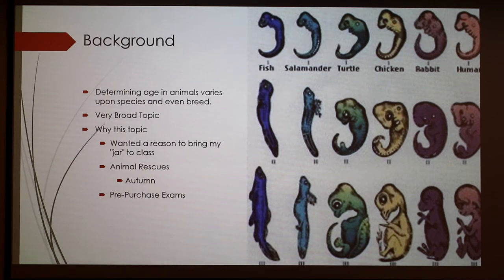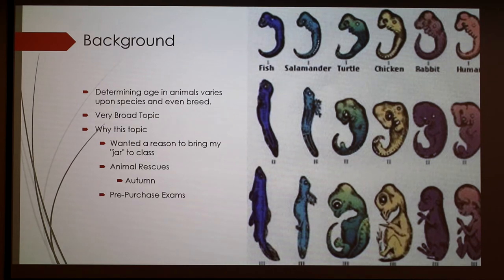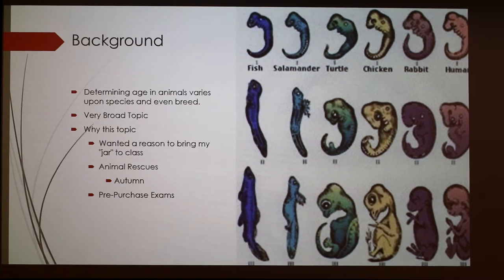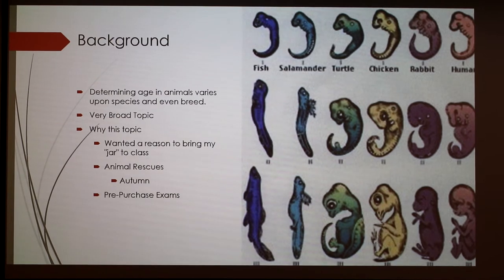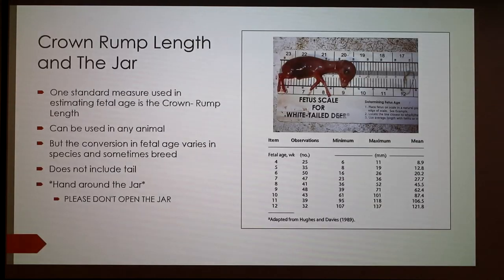Other reasons I wanted to do this topic: animal rescues. My family's been with an animal rescue since before I was 10 years old, and a big issue is getting a foster animal in and not knowing the age of that animal, or if it's pregnant — how old the litter is, or when it might give birth. Another thing I want to talk about is pre-purchase exams, because as a horse owner, I've seen a lot of problems with people buying horses that are too young or too old compared to what the seller says.